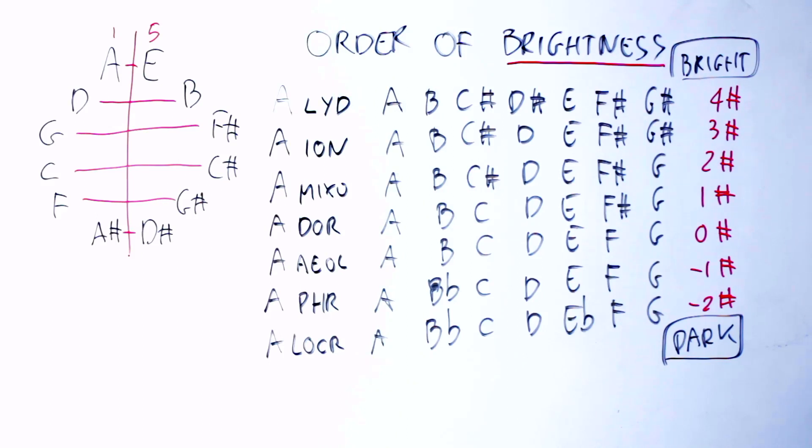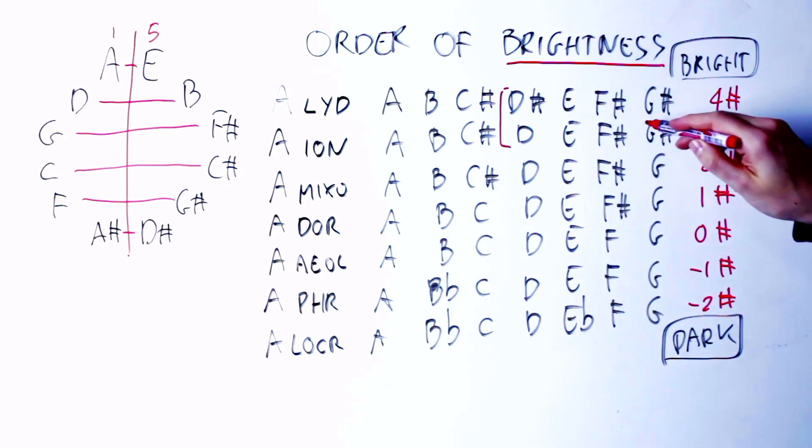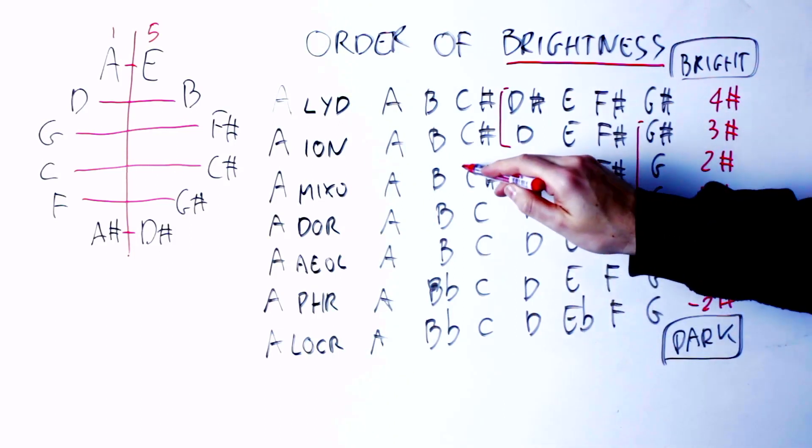Writing modes this way, in the order of brightness, has many advantages, and there are many observations you can do in this order of brightness that show you exactly how to understand and how to use modes. Again, here we have time only for one percent of what there is to know about the order of brightness, so I'm just making you notice how two modes close by in the order of brightness always differ only by one note.